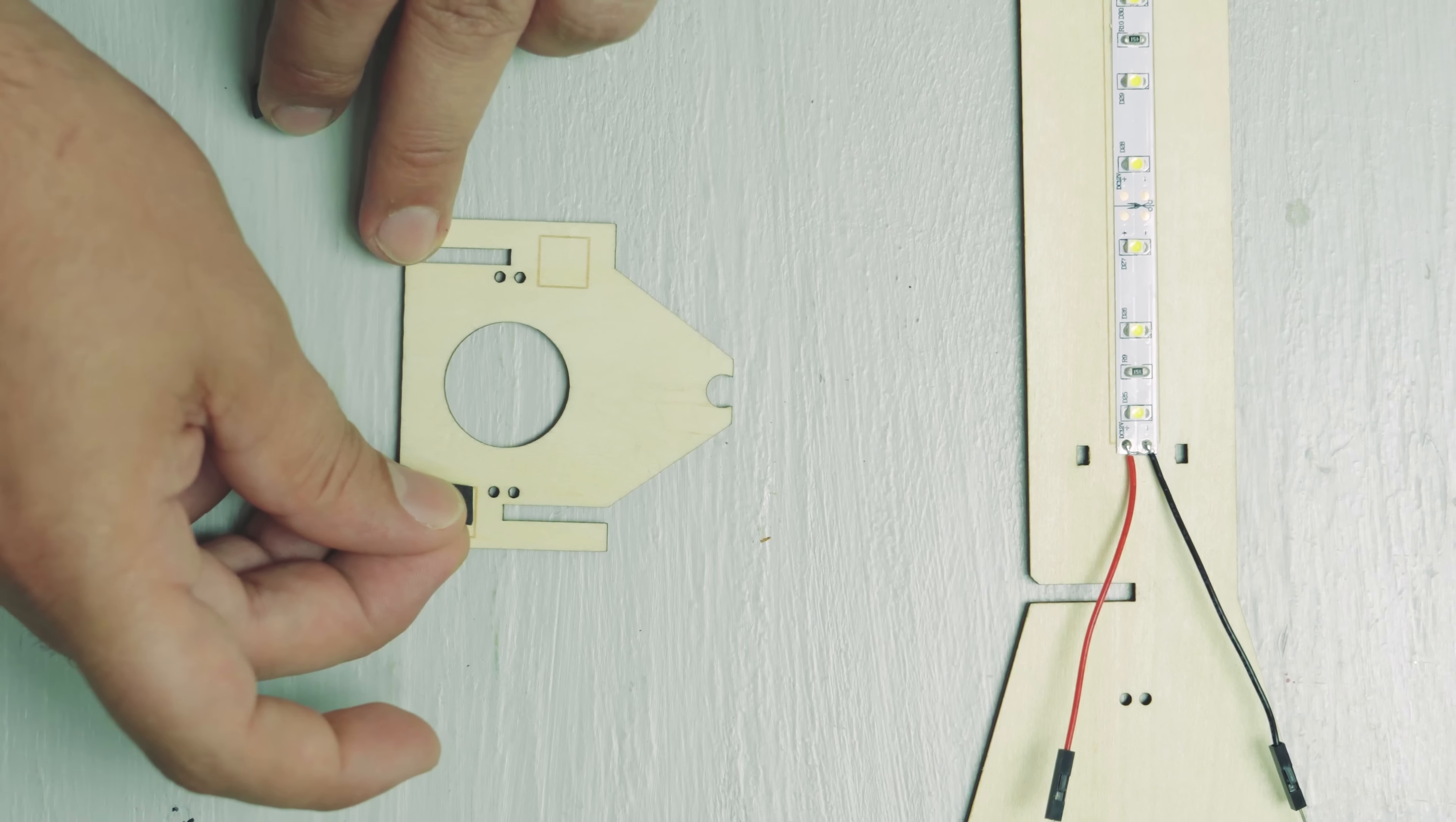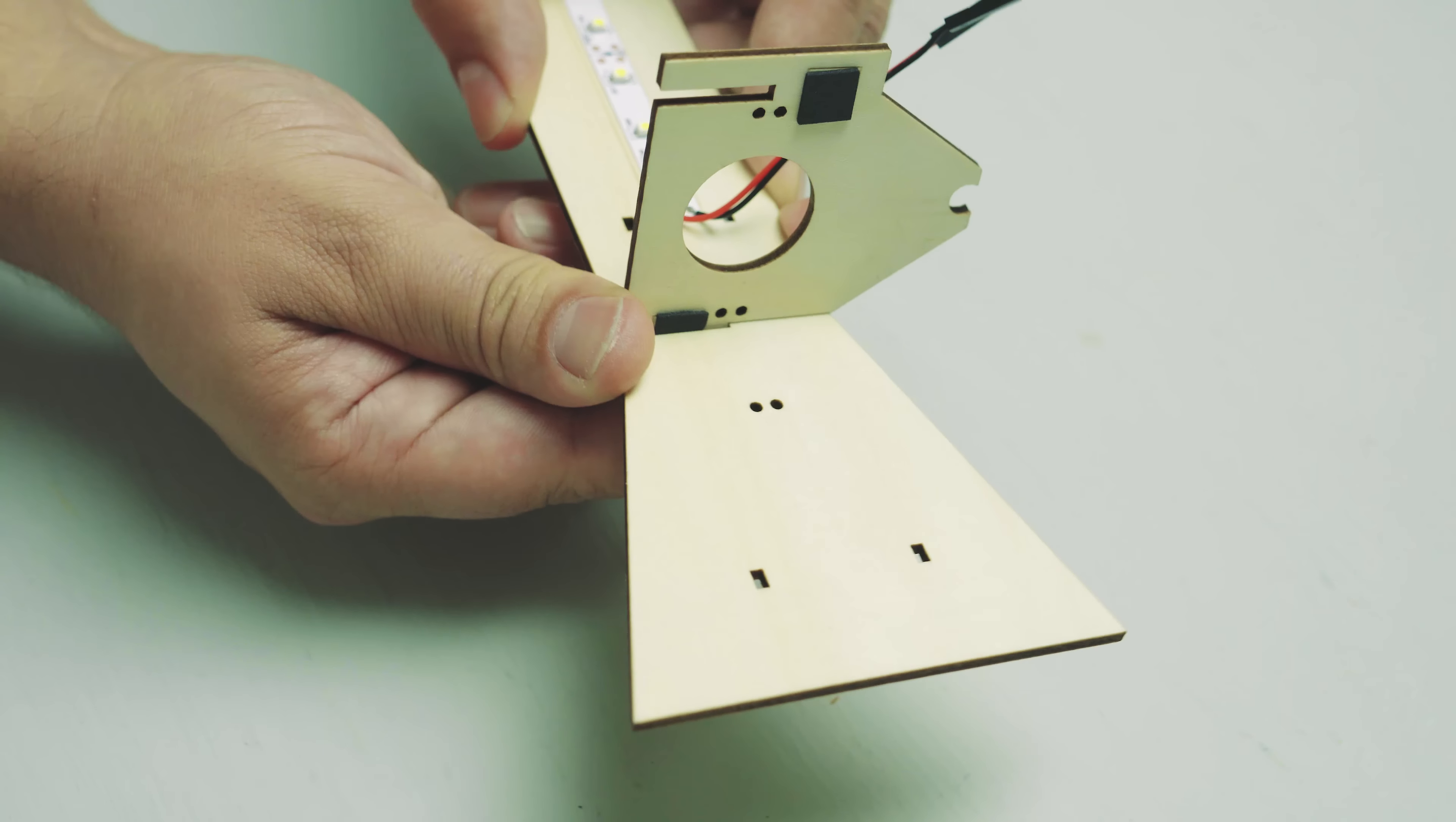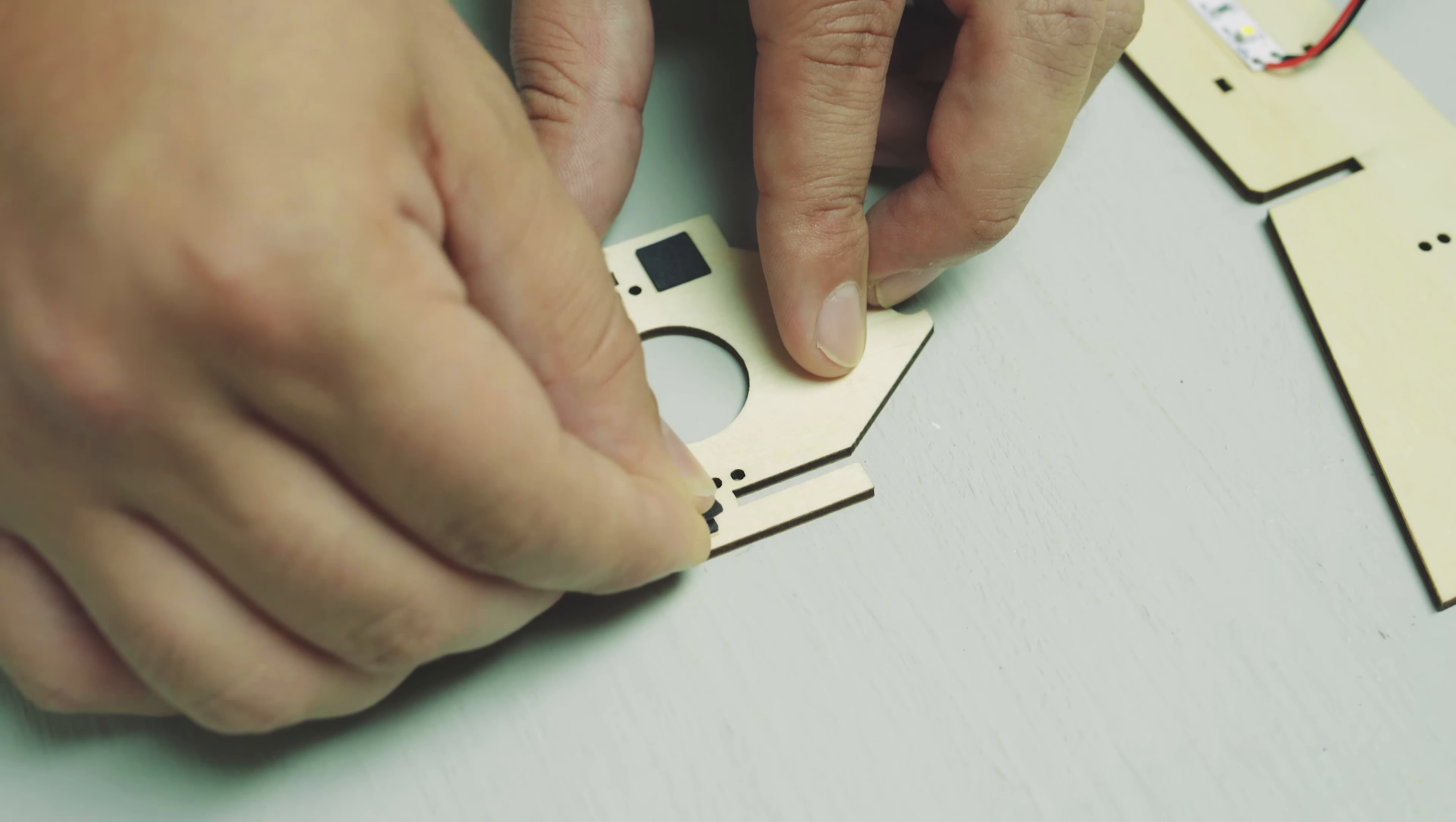Lay down your wooden base piece so that you can see the etched squares. Stick a piece of black sticky foam onto each square. Flip the base piece over so the sticky foam is on the bottom. Slide the base piece into the notch in the frame. If the base piece feels loose, pull it back out and stick another piece of sticky foam onto it.